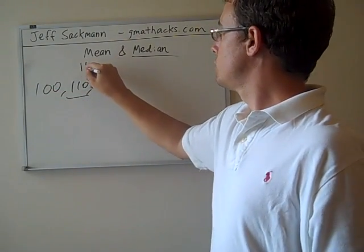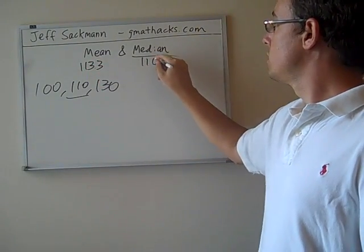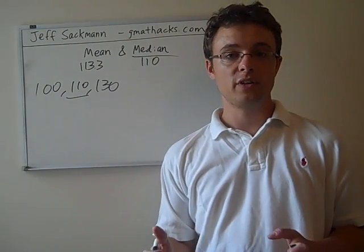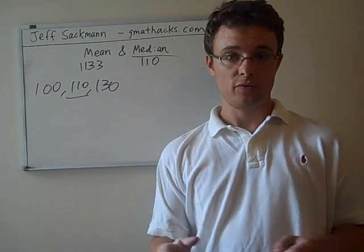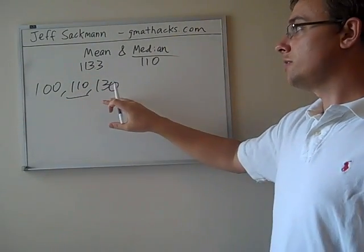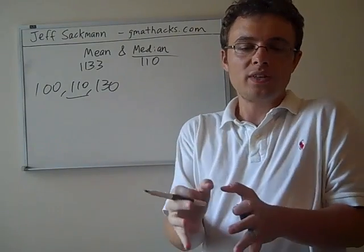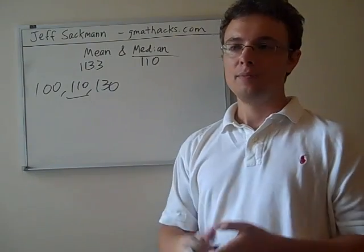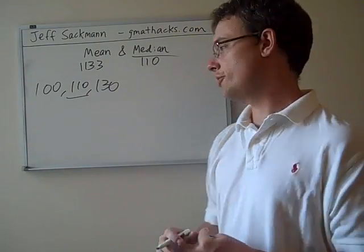So remember that the mean in this case was 113, and the median in this case is 110. Now one of the things I want to help you understand in this video today is why these are different when they're different. So what you'll notice is that in this set, the 130 is the farthest from the middle. 110 and 100 are pretty close together. 130 starts to slightly skew the set.